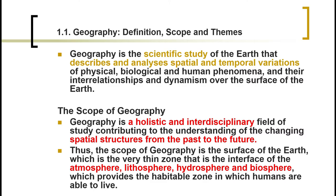The scope of geography is broad. Geography is a holistic and interdisciplinary field because the huge scope of geography covers the four spheres: the atmosphere, lithosphere, hydrosphere, and biosphere. Every kind of discipline studies about these four spheres. For that matter, geography overlaps with other disciplines, which is why we say it is an interdisciplinary and holistic discipline that takes into consideration other subjects.